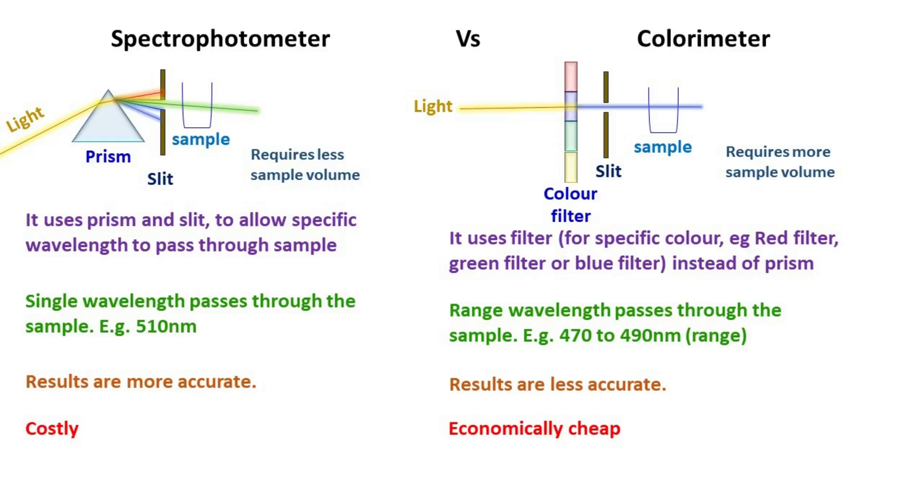In spectrophotometer, the light source is hydrogen or deuterium lamp. Whereas in colorimeter, the light source is tungsten lamp.